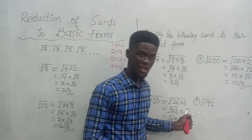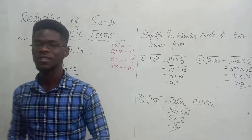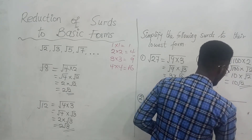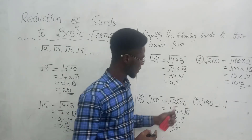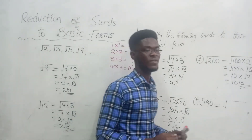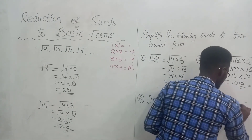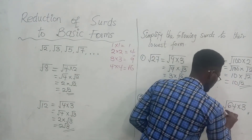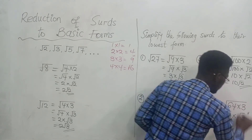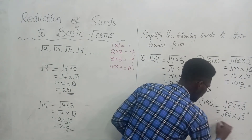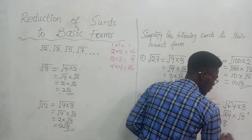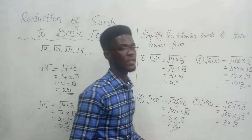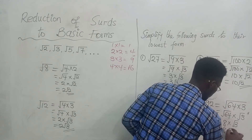Let's do the last one: the square root of 192. Which two numbers are we going to multiply to get 192? The answer is 64 and 3. 64 times 3 gives me 192. We have square root of 64 times square root of 3. The square root of 64 is 8. The square root of 3 is already in simplest form, so we leave it. The final answer is 8 root 3.